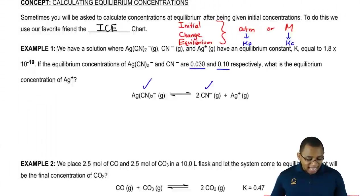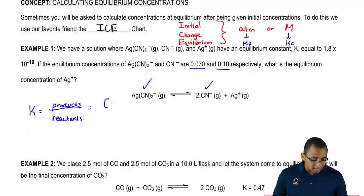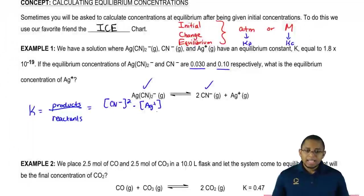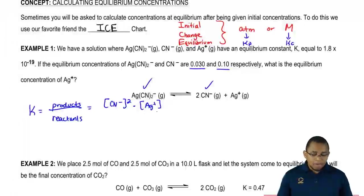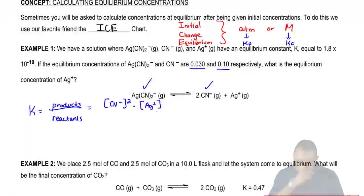So we're simply going to say that K equals products over reactants. The products here would be CN⁻ squared times Ag⁺. I'm going to remove myself from the image so we have more room to work with. That is divided by AgCN₂⁻.